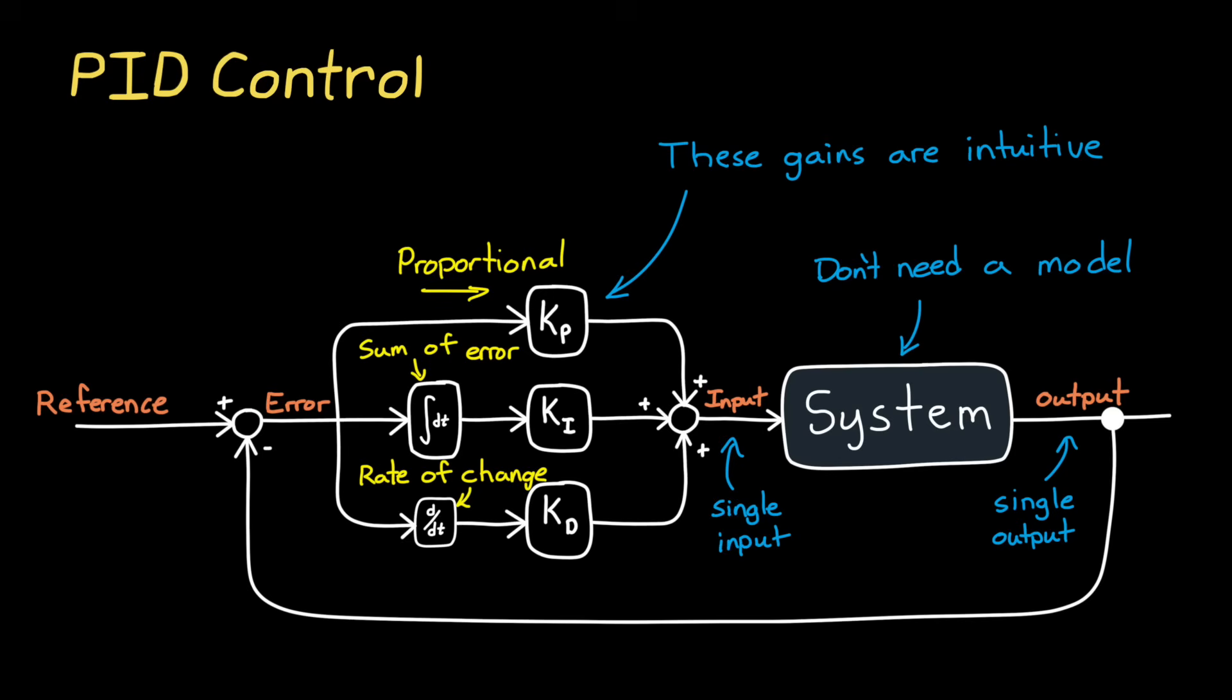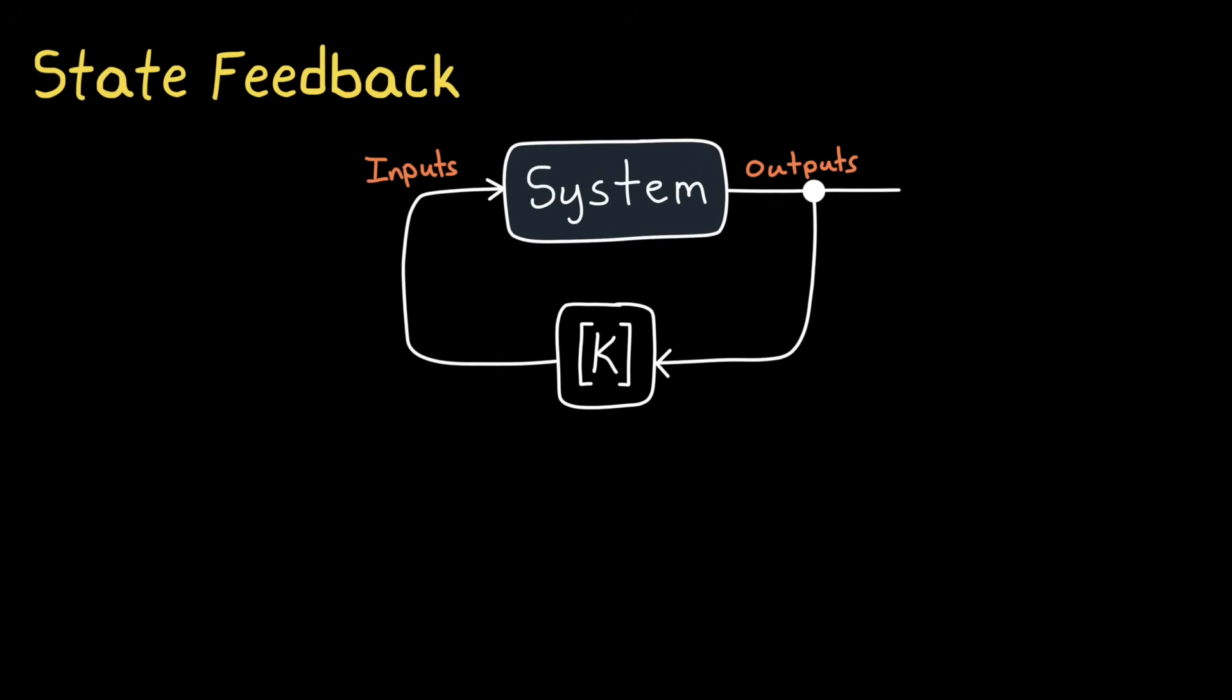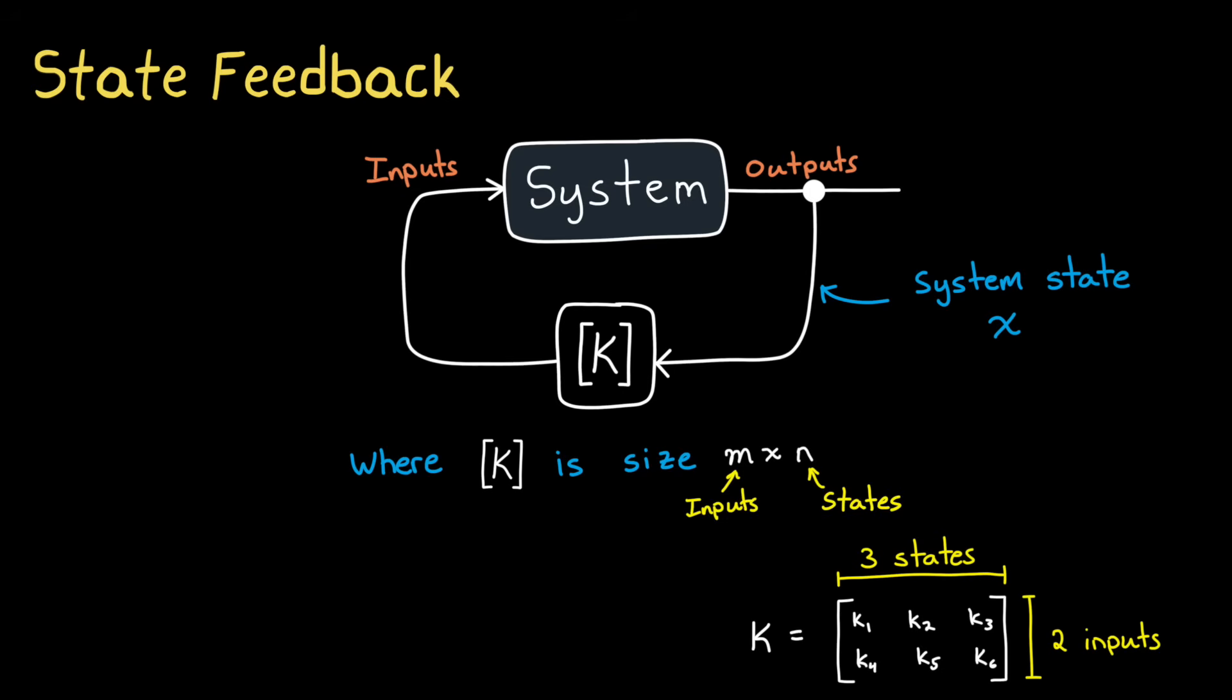Now, PID control is usually reserved for single input and single output systems. And there are ways to do PID control on multiple variable systems, but they can get a bit clunky. So this is where other methods like state feedback comes in handy. In state feedback, the signal that is fed back to the controller is an estimate of every state in the system. So instead of having just three gains like we did with PID, this controller has a matrix of gains with size equal to the number of inputs by the number of states. For example, a system that has three states and two inputs, there would be six different gains. And in this way, every input into the system is just a linear combination of every single state.